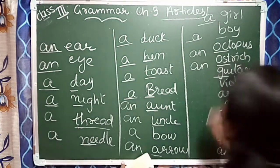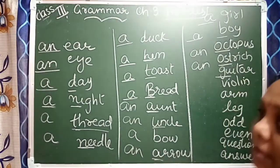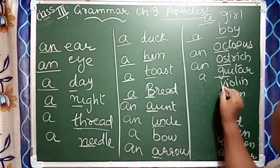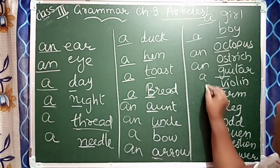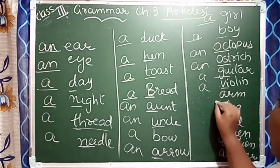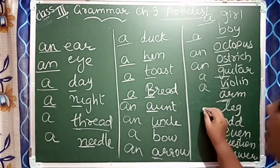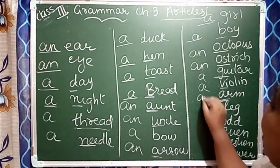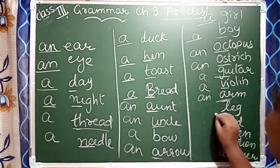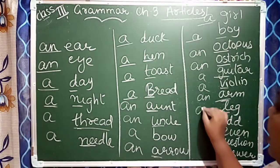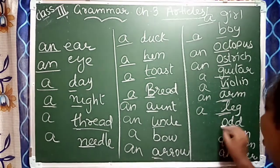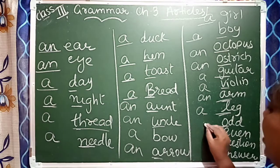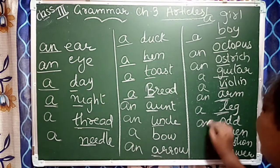Guitar — G is a consonant, so 'a' will come. Violin — V is a consonant, so 'a' will come. Arm — A is a vowel, so 'an' will come. Life, Love — consonant, so 'a' will come. Or — O is a vowel, so 'an' will come.